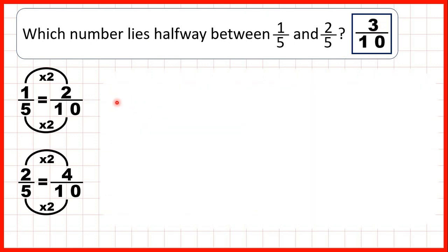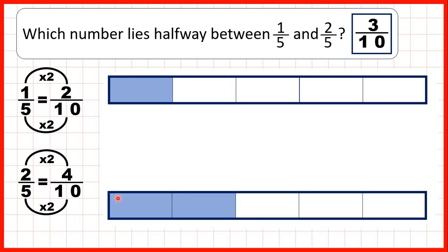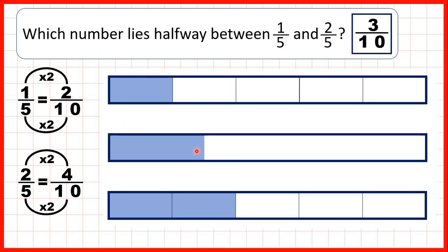So we can show fraction bars for one-fifth and two-fifths and we wanted the number halfway between them. So we can show a fraction bar and you can see what's shaded is halfway between our top and bottom fraction bars. But that's three-tenths, and the way we found that was we changed one-fifth into two-tenths, two-fifths into four-tenths, so we could see that three-tenths was right in the middle.